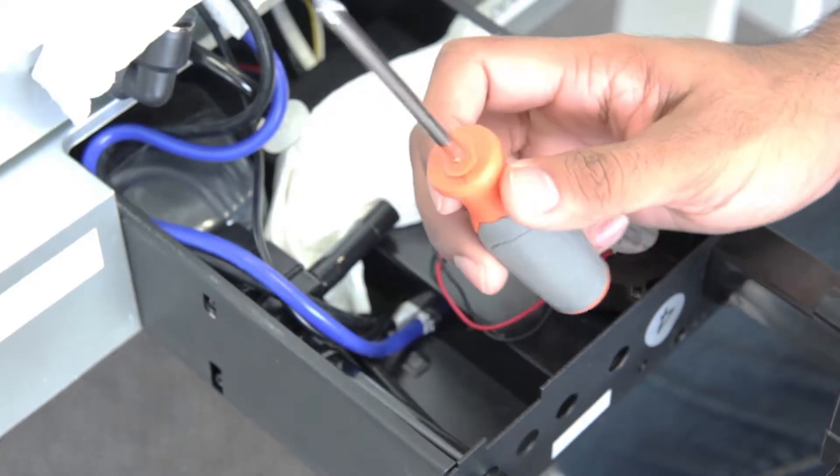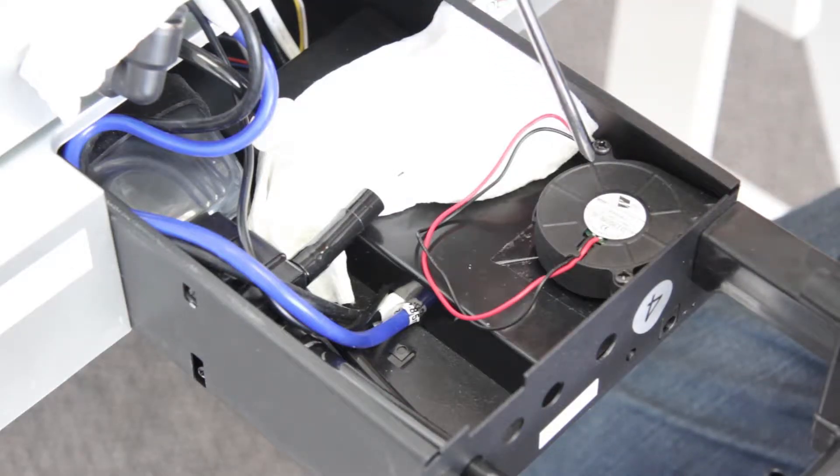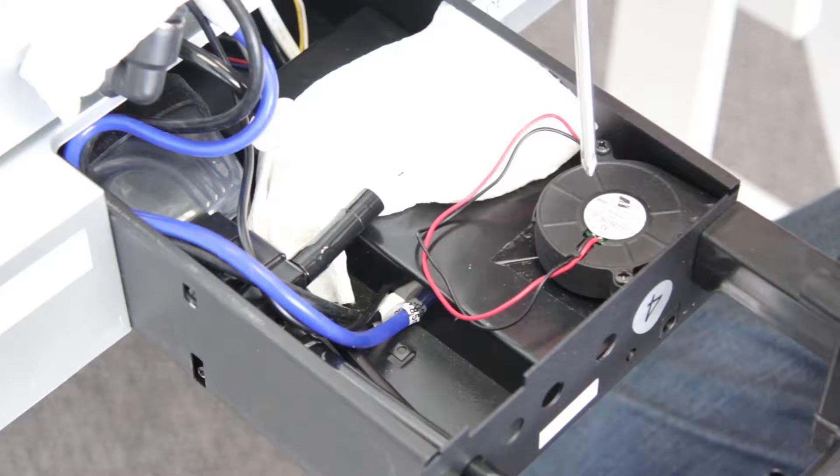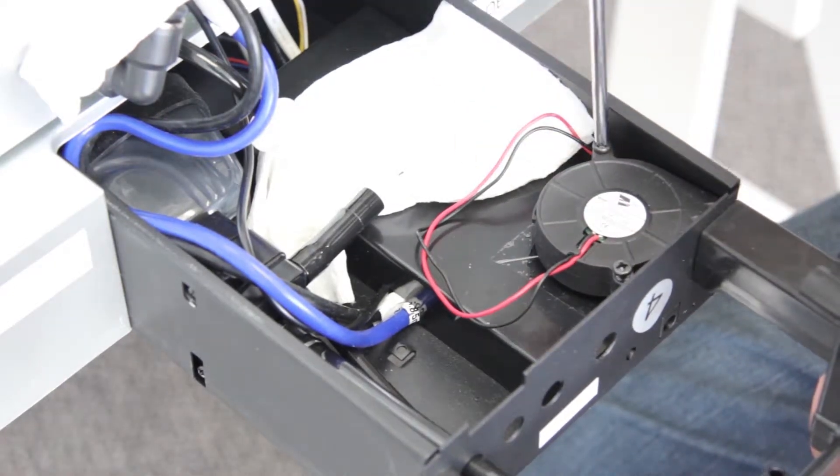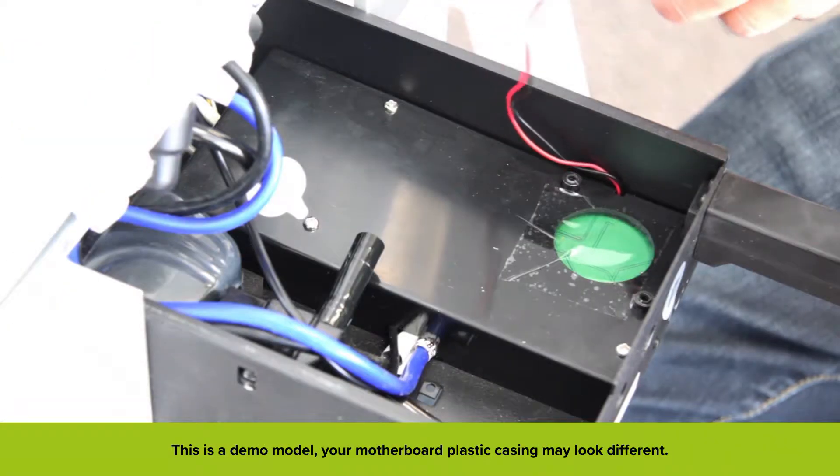Now we'll be using a Phillips head screwdriver. We will be removing these two screws in order to remove the ventilation fan and just leave it hanging on the side.